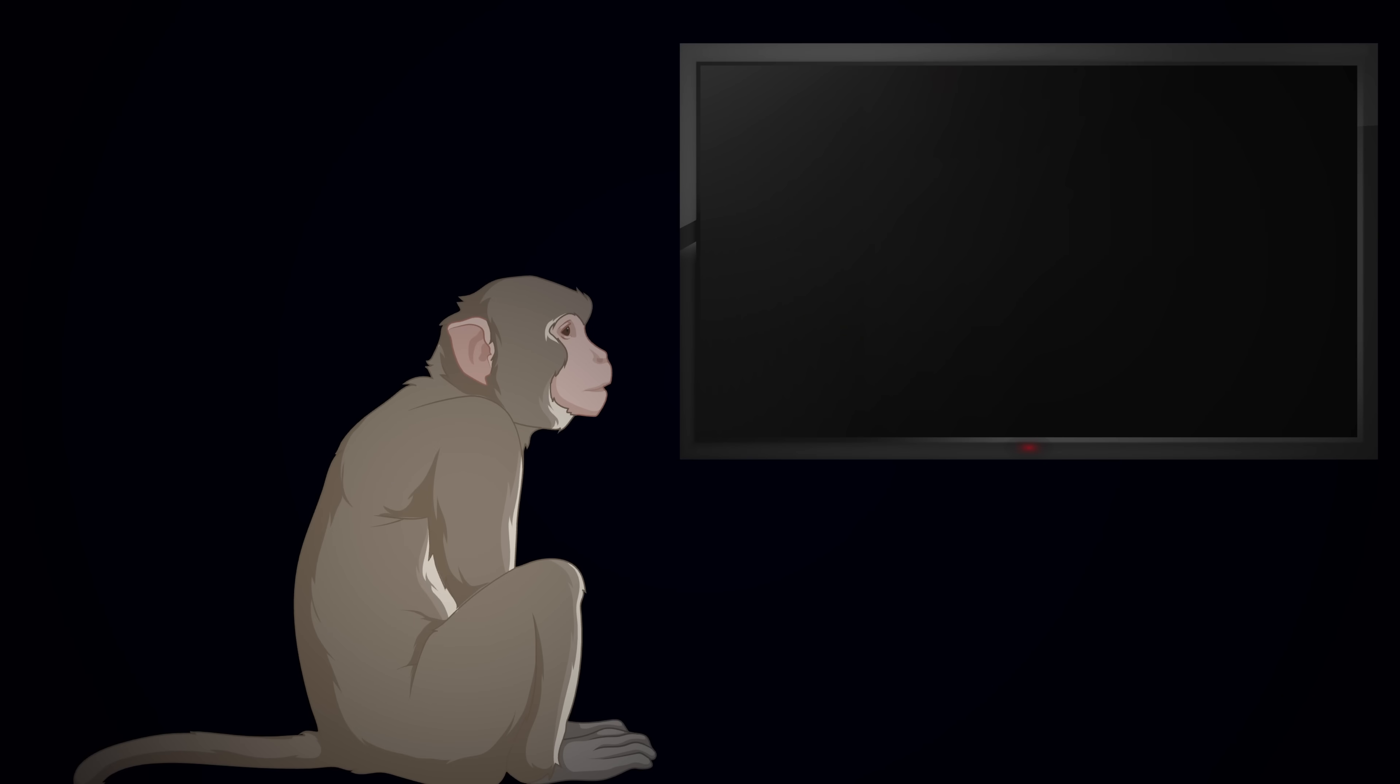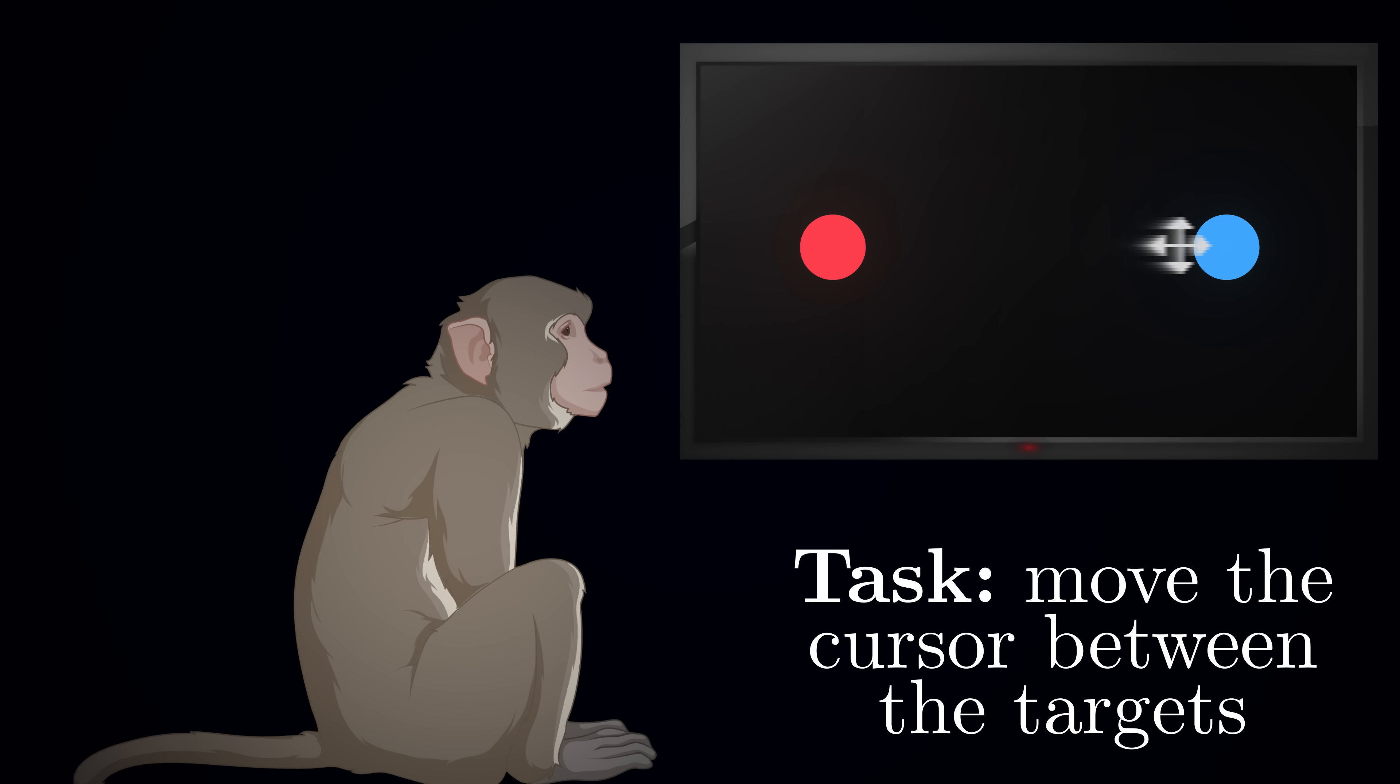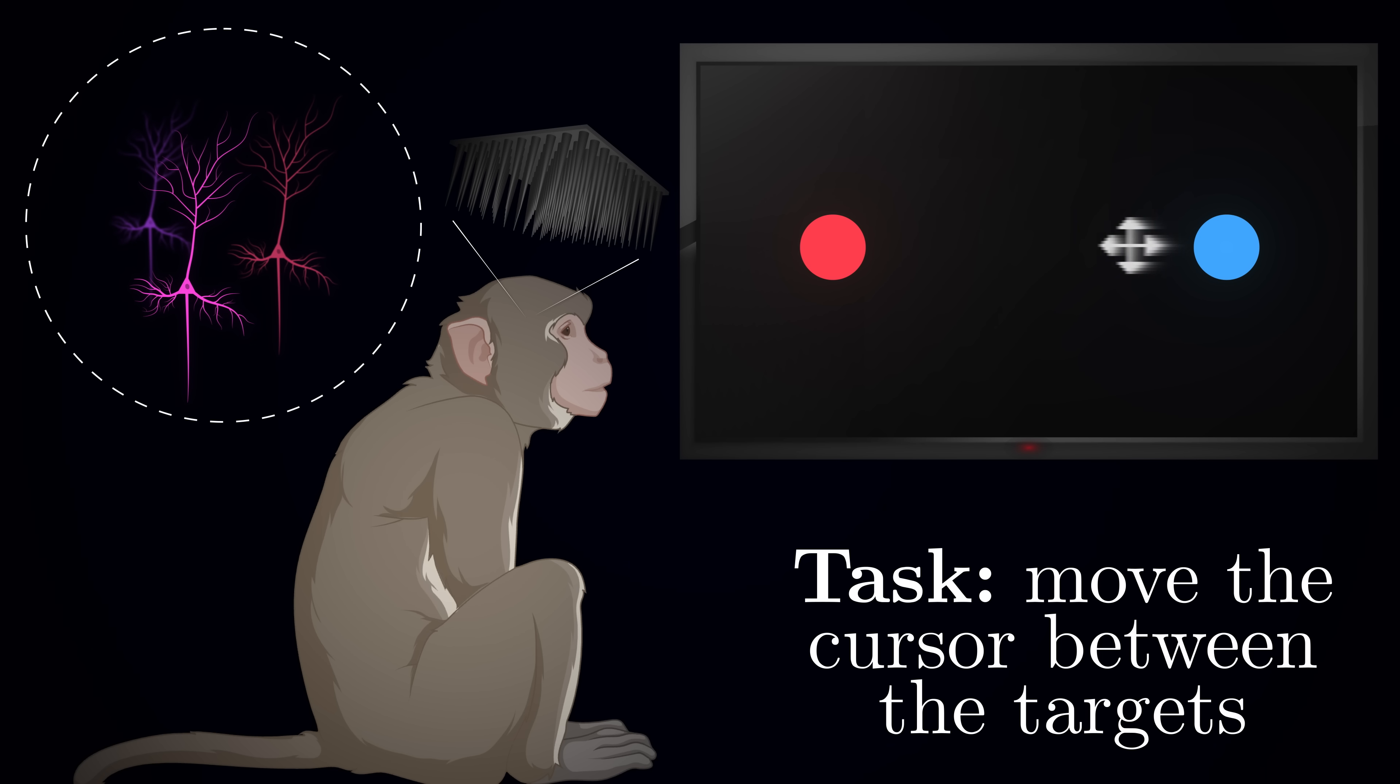Imagine you're teaching someone to play a video game, but with a bizarre twist. Instead of using a joystick, they have to control the game using their thoughts alone. This is pretty much what researchers did with monkeys in their groundbreaking experiment. Monkeys sat in front of a screen showing two targets and a cursor that they needed to move between the targets to obtain rewards. Tiny electrodes in their motor cortex were recording the activity of around 90 neurons and transforming it into the position of the cursor. But what exactly is this transformation? How do you turn the complex symphony of 90 neurons into something as simple as moving the cursor left or right?